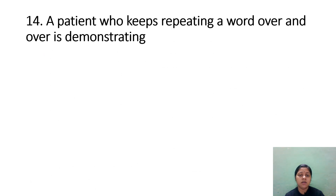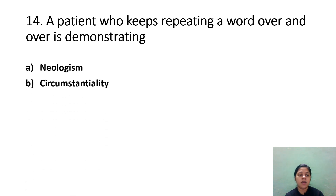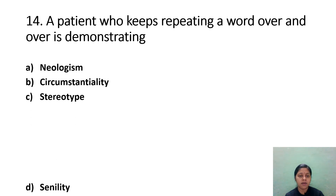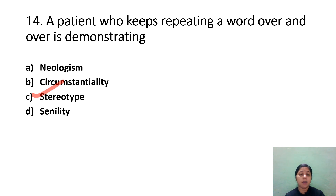A patient who keeps repeating a word over and over is demonstrating: Option A: Neologism. Option B: Circumstantiality. Option C: Stereotype. Option D: Senility. The correct answer is Option C, Stereotype. Stereotype repeated in this context is also called verbigeration.